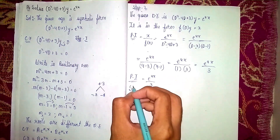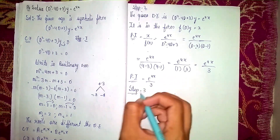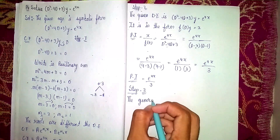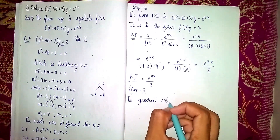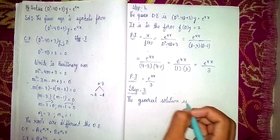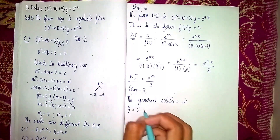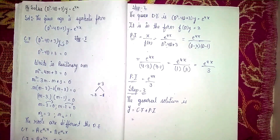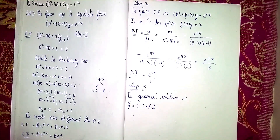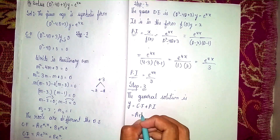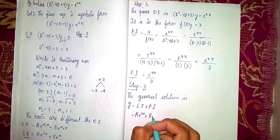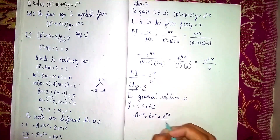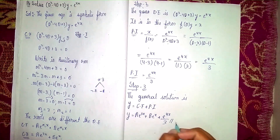Now Step 3: the general solution. The general solution is y equals complementary function plus particular integral. So y equals a·e^(3x) plus b·e^x plus e^(4x) divided by 3. This is our general solution and our final answer. Thanks for watching.